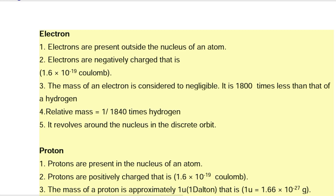Electron: (1) Electrons are present outside the nucleus of an atom. (2) Electrons are negatively charged, that is 1.6 × 10⁻¹⁹ coulombs. (3) The mass of an electron is considered negligible — it is 1800 times less than that of hydrogen; relative mass equals 1/1840 times hydrogen. (4) It revolves around the nucleus in discrete orbits. Proton: (1) Protons are present in the nucleus. (2) Protons are positively charged, that is 1.6 × 10⁻¹⁹ coulombs. (3) The mass of a proton is approximately 1 u (1 dalton), where 1 u = 1.6 × 10⁻²⁷ grams.